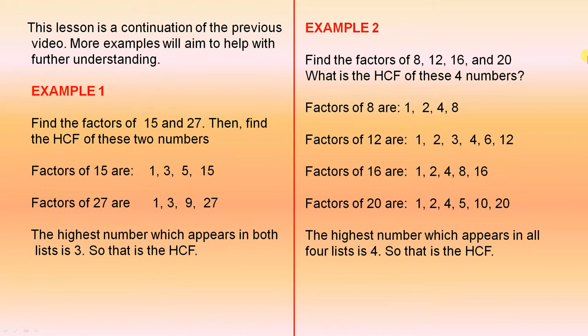Example 1. Find the factors of 15 and 27, then find the highest common factor of these two numbers. So the factors of 15 are those four numbers. The factors of 27 are those four numbers. The highest number which appears in both lists is 3, so that is the highest common factor.